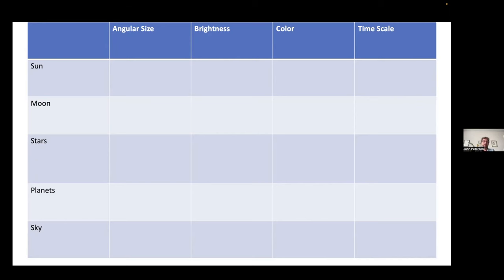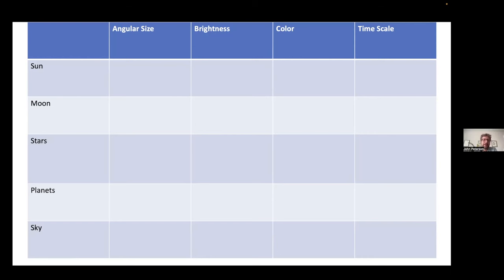Let's do angular size first. Angular size is how big something appears to you — how big of an angle something takes up on the sky. To give you a rough sense: if you put your pinky out at arm's length and look at the nail of your pinky, that's about a degree. Why don't you try to fill out that first column now? Think about how big each of these things are — the sun, the moon, the stars, the planets, and the sky itself. How many degrees are each of them? Any volunteers? Well, since I try not to look right at the sun too much, I estimated around five degrees. Five degrees — good guess. It's a little bit smaller than that.